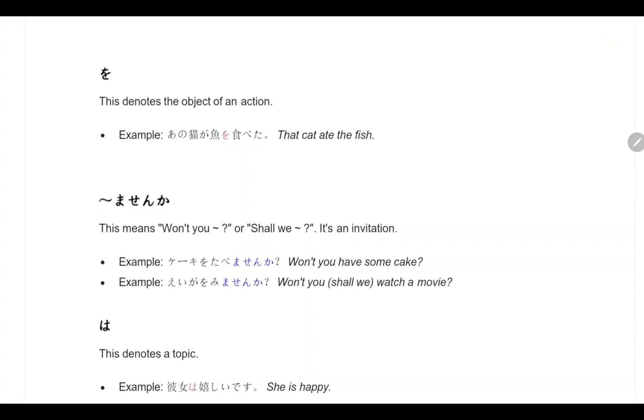Next. Haan, or we call it wa. This denotes a topic. Kanojo wa ureshi desu. Ureshi desu means happy. Tanoshi is also happy, ureshi is also happy. Kanojo wa ureshi desu.